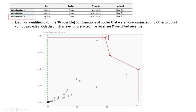Notice that optimal product three — a 48-can model, seven days of cooling, a 90-day limited warranty, and hardtop material — is predicted to have the largest market share, even more so than our other two optimal products. However, it comes at the expense of lower per-unit incremental revenue, because it costs quite a bit of money to introduce a 48-can option with seven days of cooling.